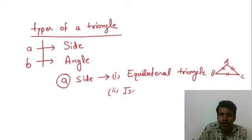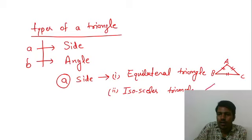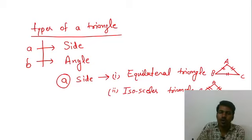Second, Isosceles Triangle. It means two sides of a triangle are equal. त्रिभुज की दो भुजाएं आपस में बराबर होंगी. उसको हम बोलेंगे Isosceles Triangle. और हिंदी में इसको बोलते हैं समद्विबाहु त्रिभुज. And we have third one.